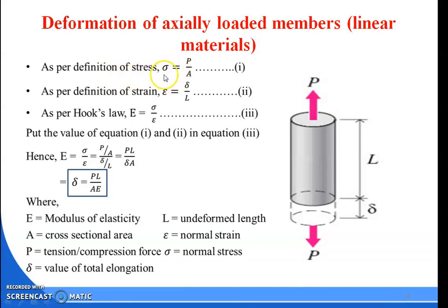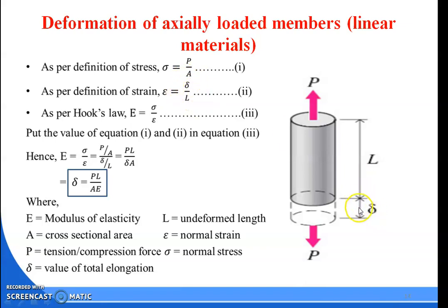As per the stress definition, stress equals force per unit area. The force is defined as P and the area is the cross-sectional area of the body, giving sigma equal to P over A. Then, strain equals change in length divided by original dimension. The change in the body is delta and the original length is L, so strain equals delta over L.